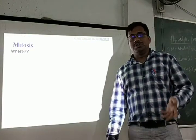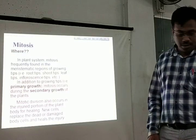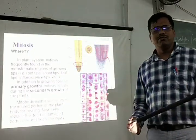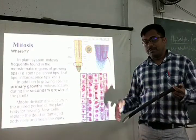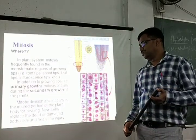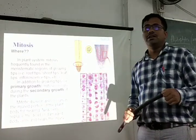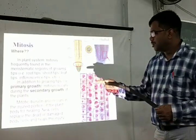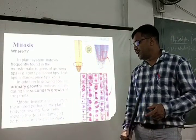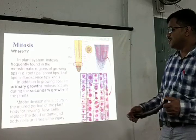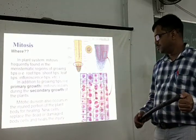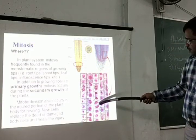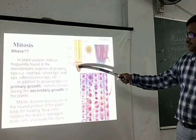Where does mitosis occur? In plants, mitosis is frequently found in the meristematic regions of growing tips — root tips, shoot tips, rib meristems, or intercalary meristems. In addition to growing tips where primary growth occurs, mitosis also occurs during secondary growth in the region of lateral meristems. Mitotic division also occurs in injured portions of the plant for healing, where new cells replace the dead or damaged body cells. These are photographs of a root tip, where the meristematic zone shows several dividing cells with a high rate of cell division.